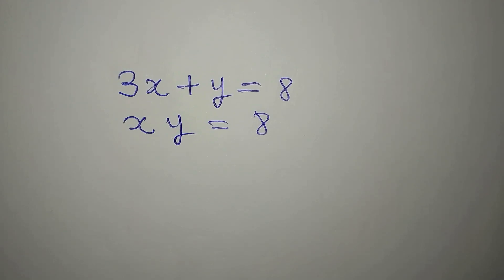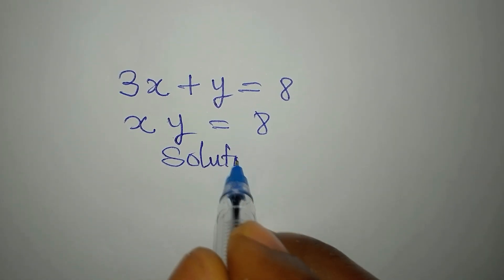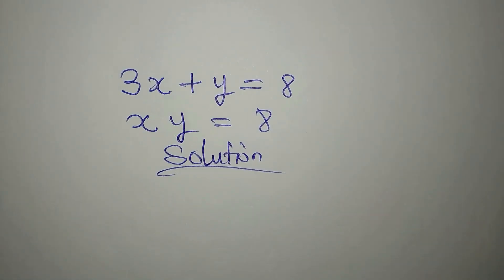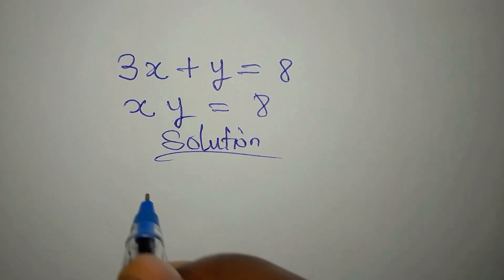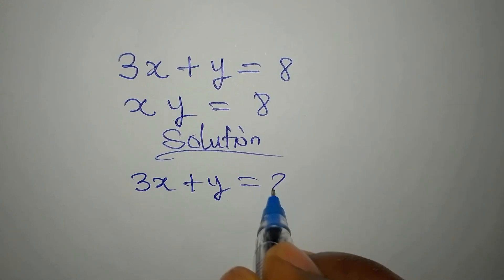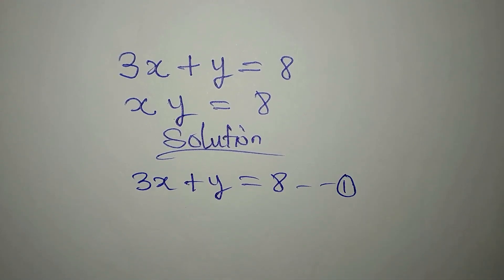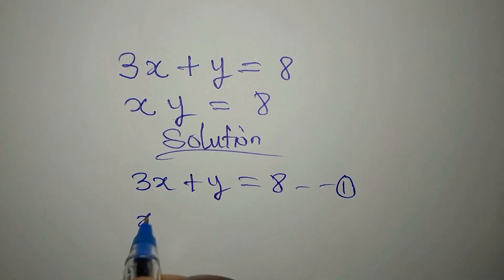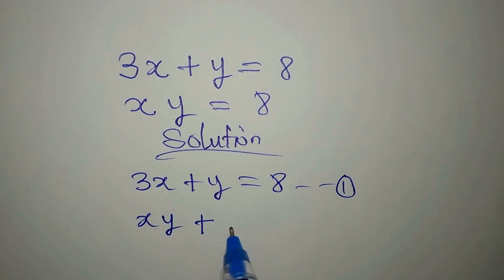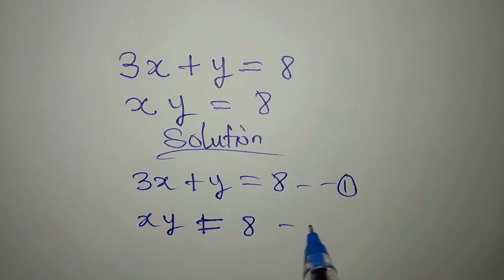Hello everyone, let's provide the solution to this problem. We have 3x plus y equals 8 — we call this equation 1. And then x times y equals 8 — we call this equation 2.